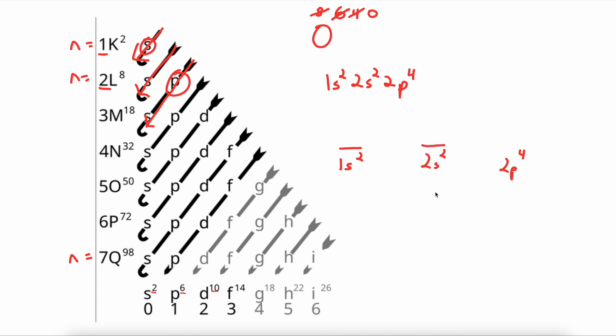The P sublevel can hold a max of 6 electrons. So we need to draw 3 orbitals, because each one of these orbitals will hold a max of 2 electrons. So 1, 2, 3, 4, 5, 6 total for the P sublevel.